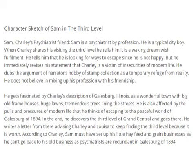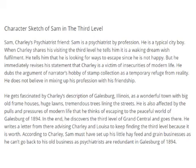The twist in the story is the disappearance of Charlie's friend Sam. Charlie and his wife now have proof that the third level exists, and that is why both of them keep on looking for it. Nobody knows where Sam is, but Charlie suspects him to be in Galesburg, having started a business that can run well there.